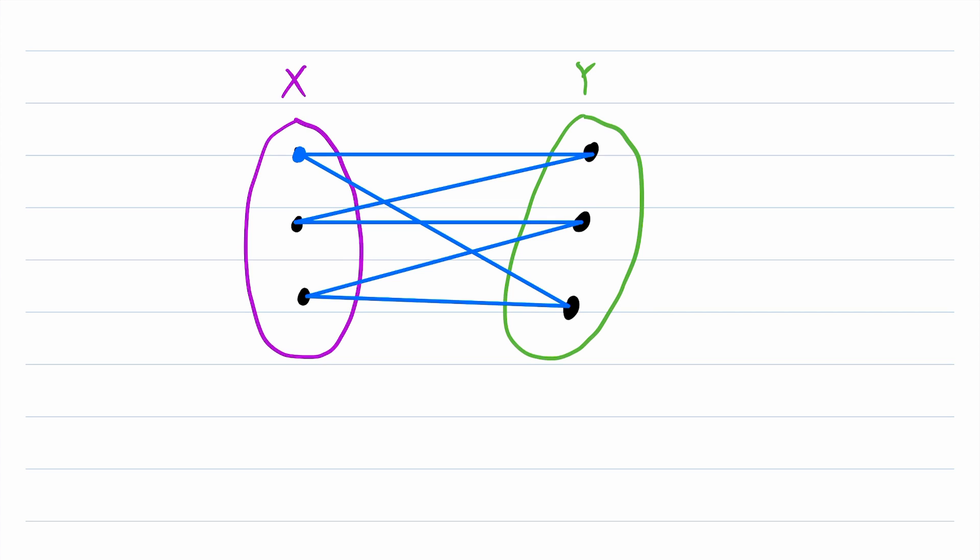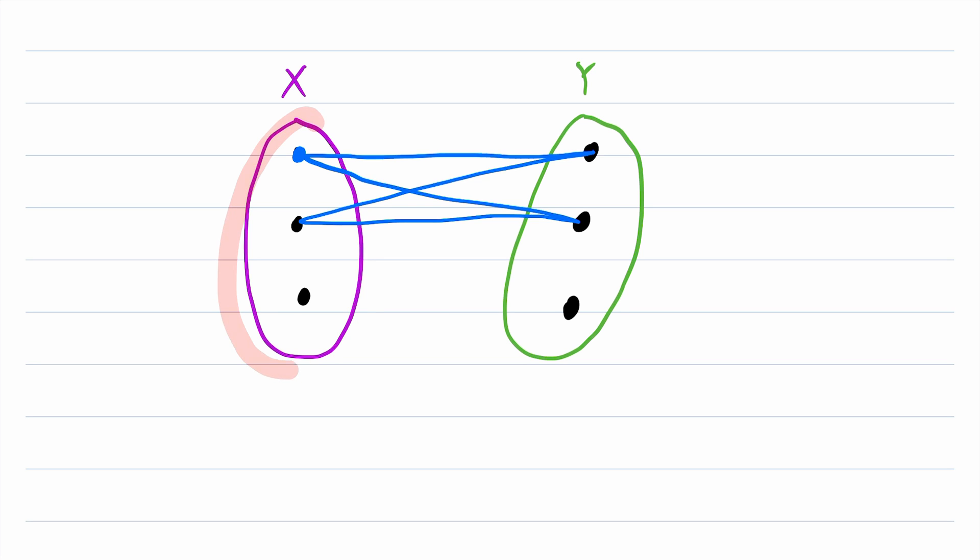So each additional edge must take the cycle from one partite set to the other. And thus, since the cycle needs to come back to where it started, it has to have an even length. Otherwise, it can't possibly end up back at the right partite set. Thus, any cycle in a bipartite graph is even. So bipartite graphs have no odd cycles.